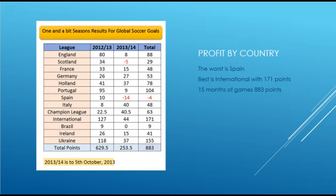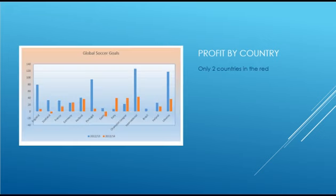By all means, these aren't the only leagues you can use. If we look at it in graph form, we can see that only Scotland and Spain are the ones below the line. England is at 80 points, Portugal with 95, and International had 123. The Ukraine jumped out of the boxes last year, had a good year, and this year is continuing. You can pick and choose what leagues you want to follow, or you can follow them all if you want action.